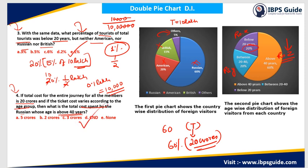I can find 60% of 20 crores to get the total amount spent by all Russian tourists, but for the above 40 years group specifically, since a variable price is involved and the value of Z is not given, the answer cannot be determined.